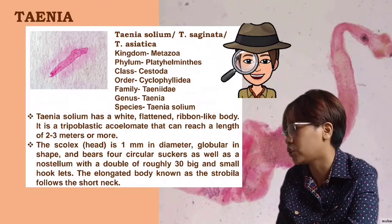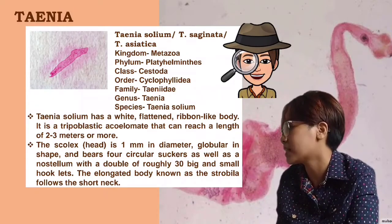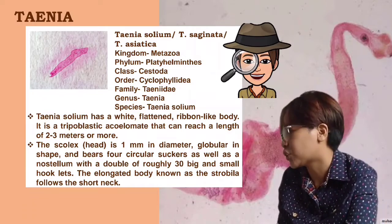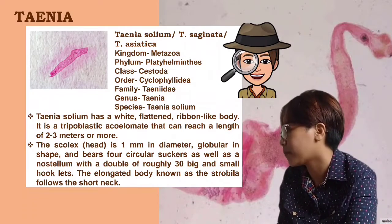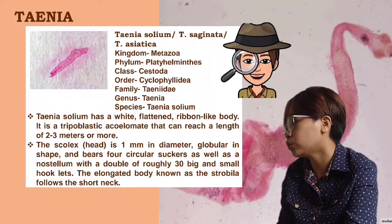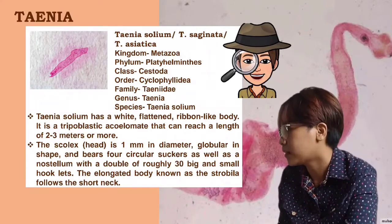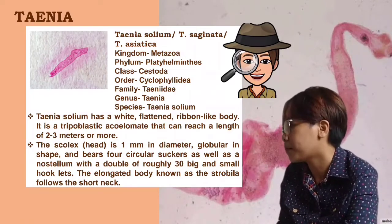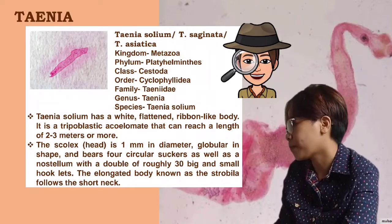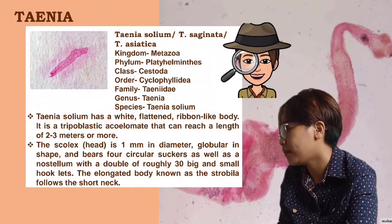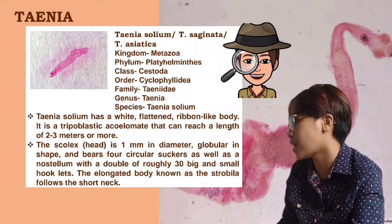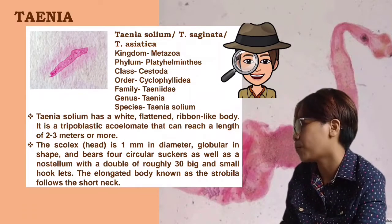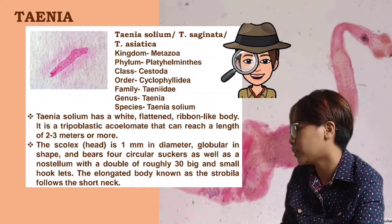For the morphology, Taenia solium has a wide, flattened, ribbon-like body. It is a hermaphroditic tapeworm that can reach a length of 2 to 3 meters or more. The scolex, or head, is one millimeter in diameter, globular in shape, and bears four circular suckers as well as a rostellum with a double crown of roughly 30 hooks.